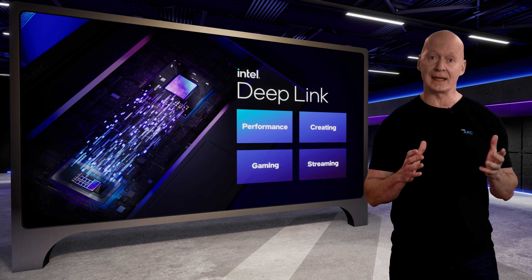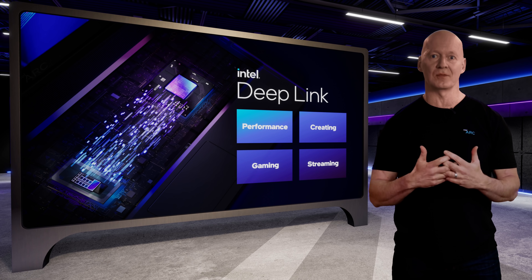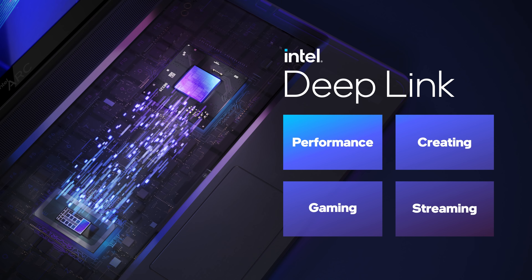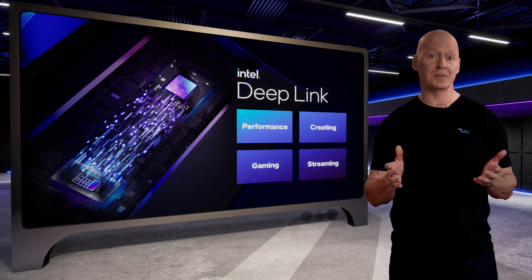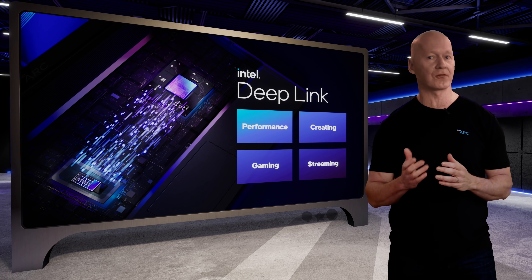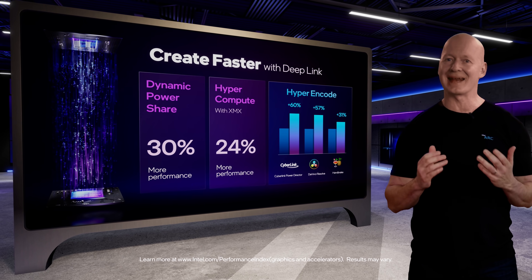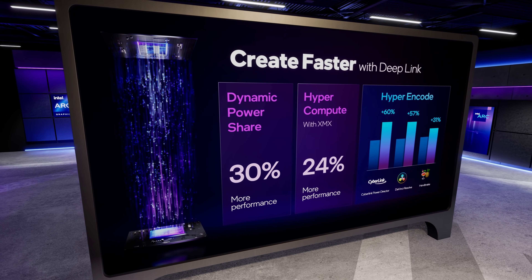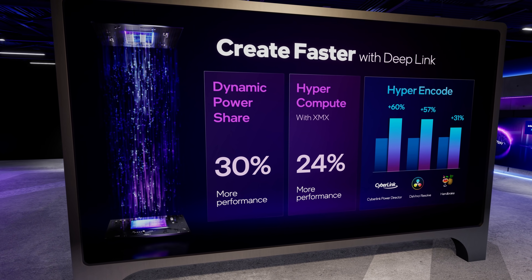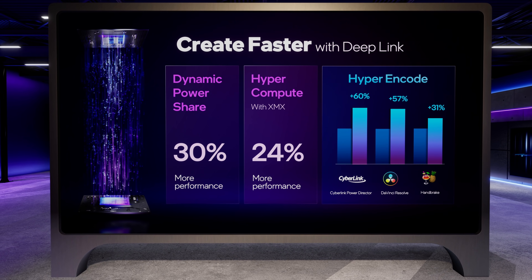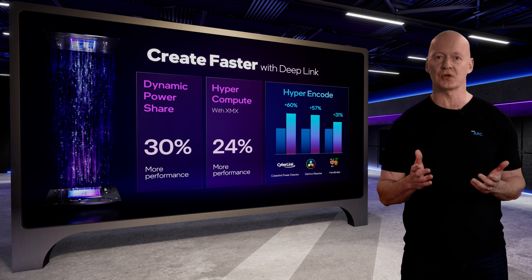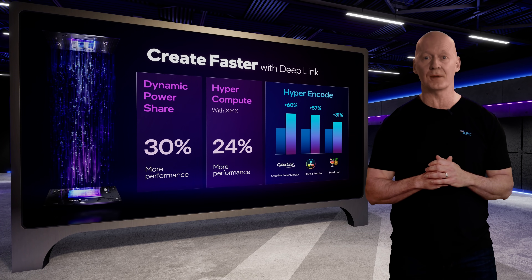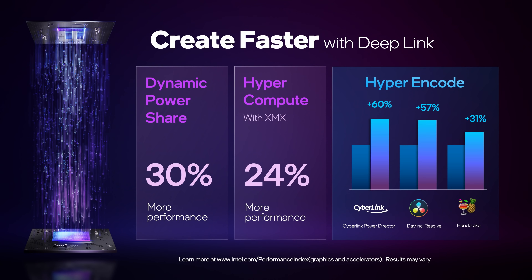While Arc Graphics delivers impressive 3D, AI, and media capabilities for laptops, all elements of the mobile platform should work well together. This is why we developed Intel Deep Link, a collection of technologies supported by every Arc-based mobile platform. With Deep Link, Arc GPUs work seamlessly with Intel CPUs and our integrated graphics to boost performance for gaming, creating, and streaming. It enables dynamic power sharing, intelligently distributing power across the platform to increase application performance up to 30% on creation and compute-intensive applications. It also includes hyper-compute, which enables a significant speedup in AI-heavy applications. Through Deep Link's hyper-encode capability, media engines from across the platform work together to speed up video encoding workloads by up to 60% compared to a single GPU.